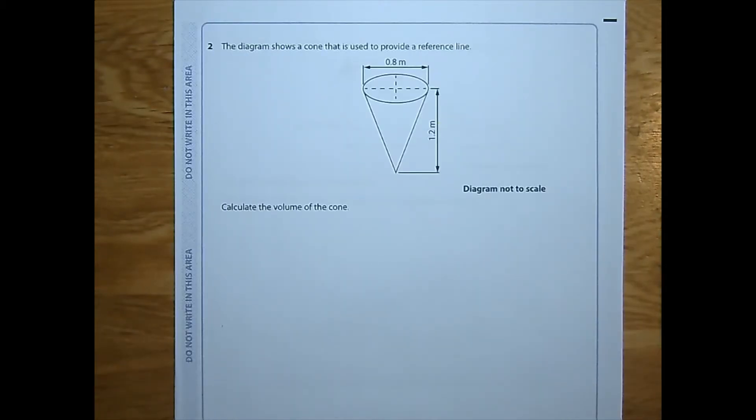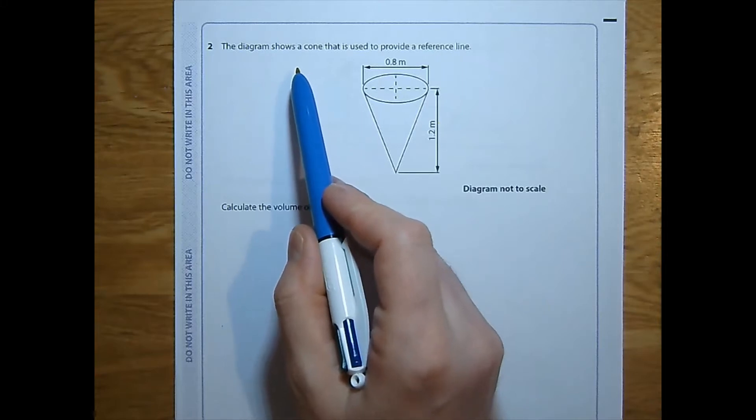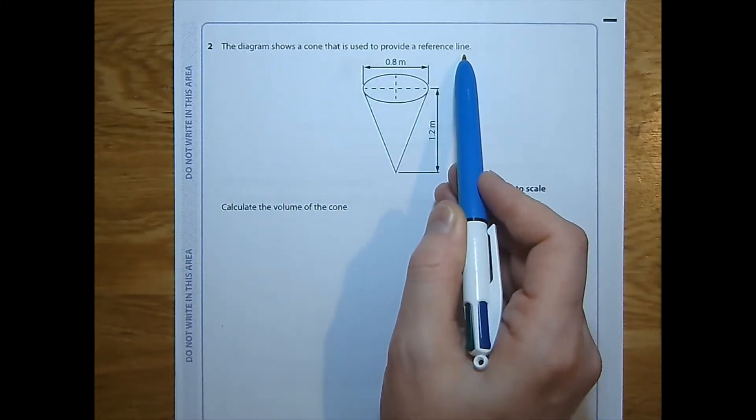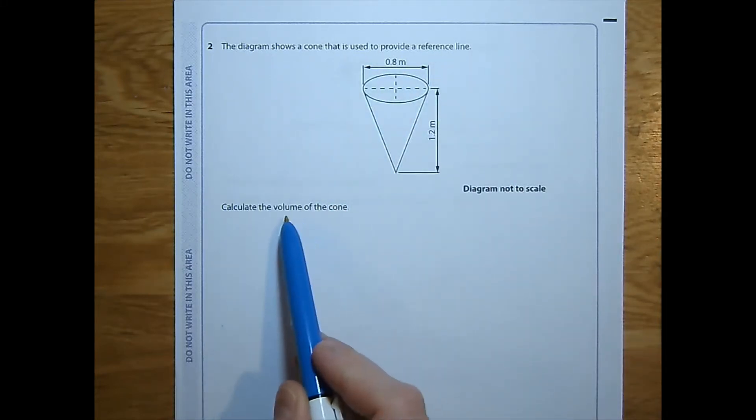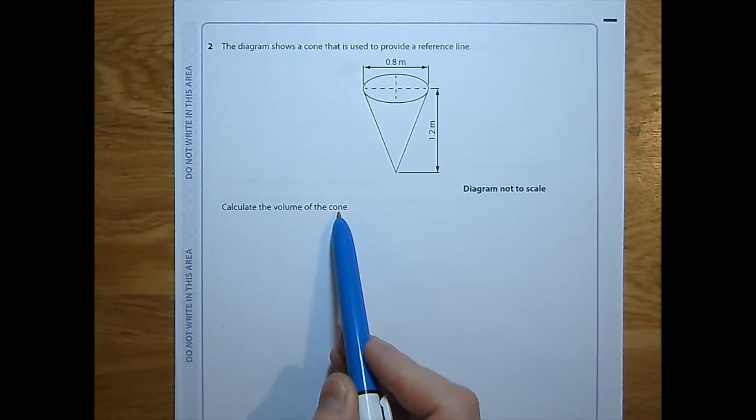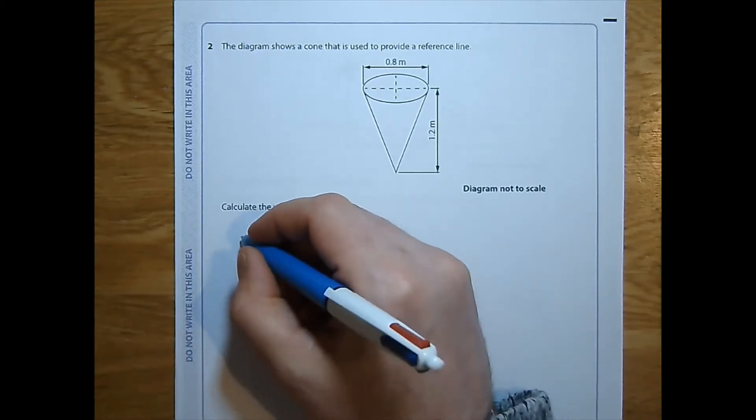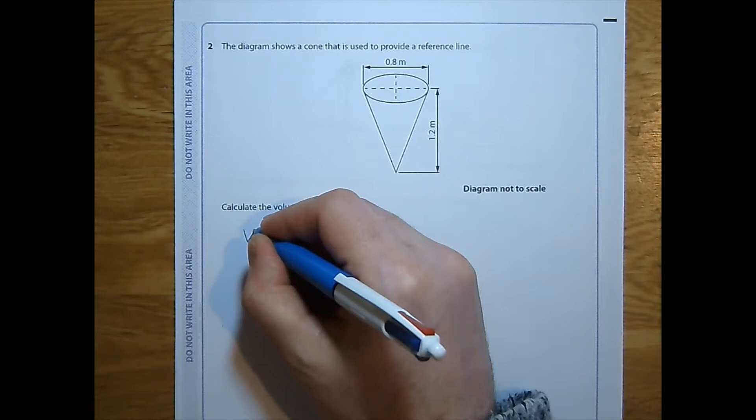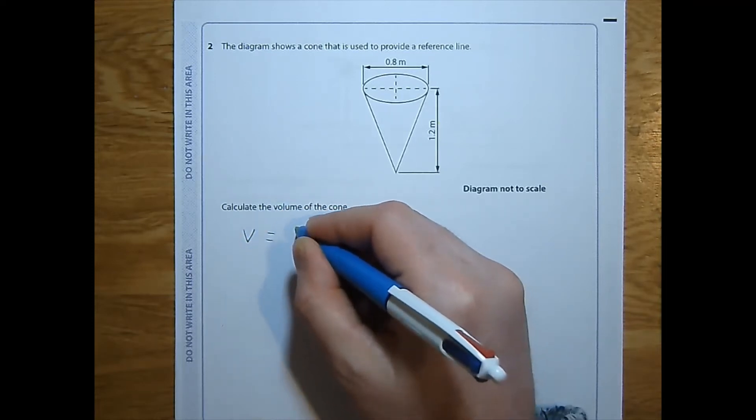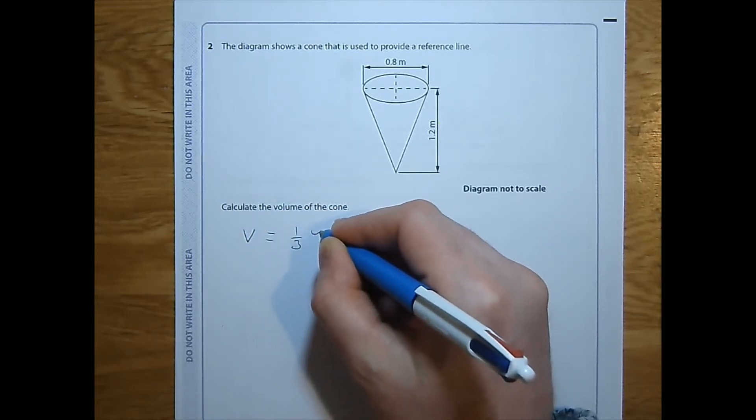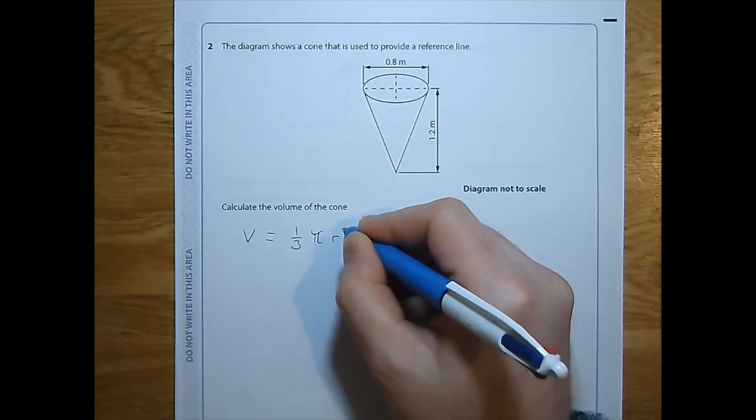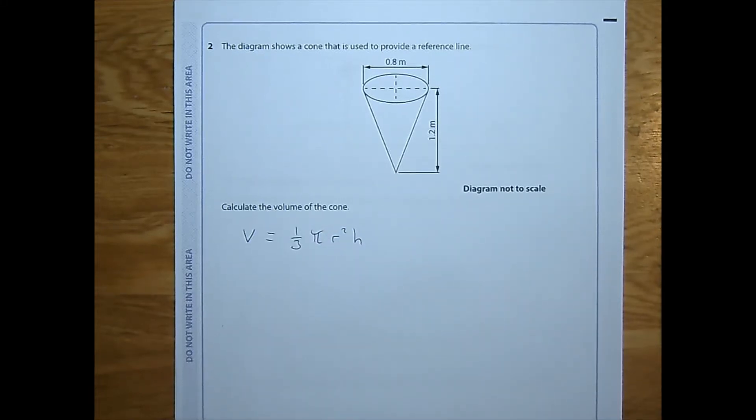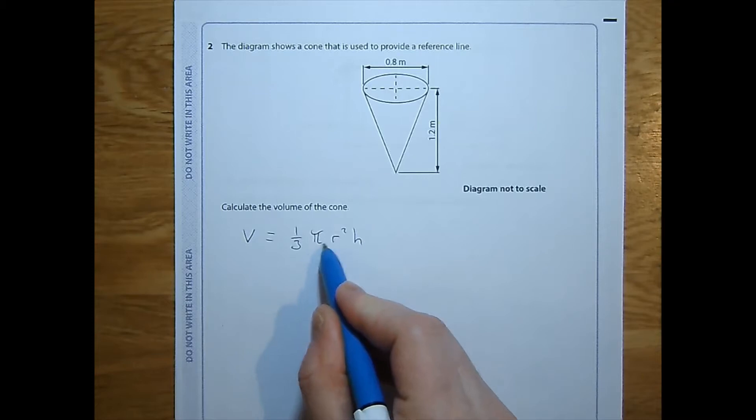Question two. The diagram shows a cone that is used to provide a reference line. Calculate the volume of the cone. I know that the volume of a cone, the formula for that, given in the formula sheet, the volume is one third pi r squared h.